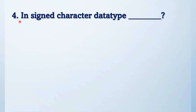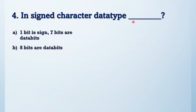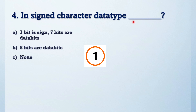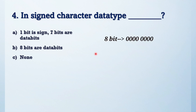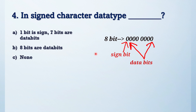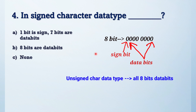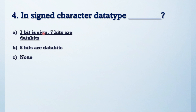Moving to the next question: in signed character data type, what is the bit structure? The options are a, b, c. In signed character data type, the size is 8 bits — the 7th bit acts as the sign bit, and bits 0 to 6 are data bits. So the answer is: 1 bit is the sign bit and 7 bits are data bits.